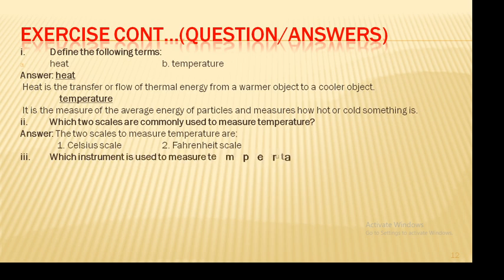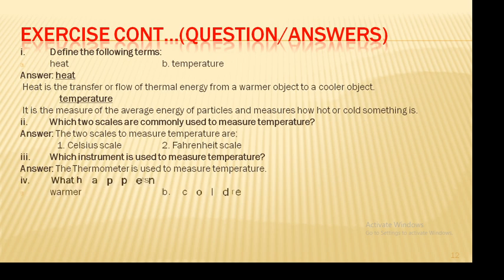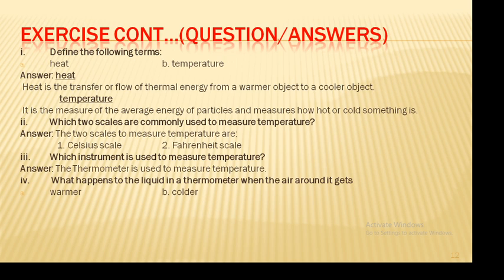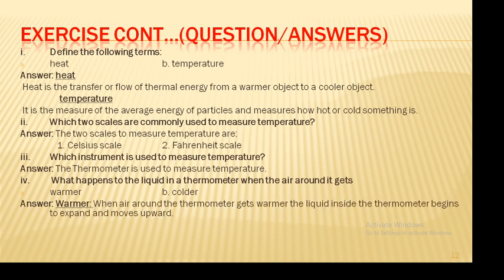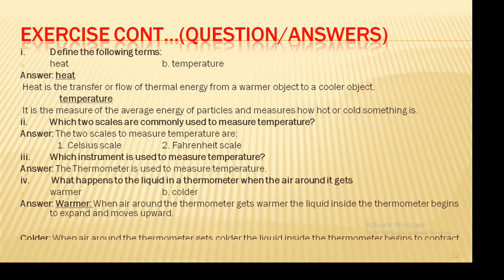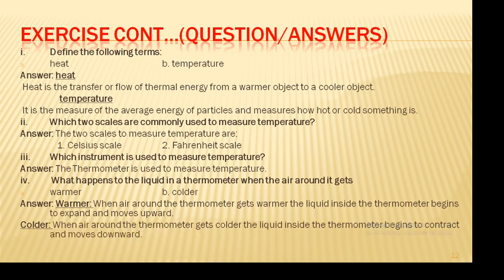Question number 3: Which instrument is used to measure temperature? Answer: The thermometer is used to measure temperature. Question number 4: What happens to the liquid in the thermometer when the air around it gets warmer or colder? Answer: When the air around the thermometer gets warmer, the liquid inside the thermometer begins to expand and moves upward. When the air around the thermometer gets colder, the liquid inside the thermometer begins to contract and moves downward.